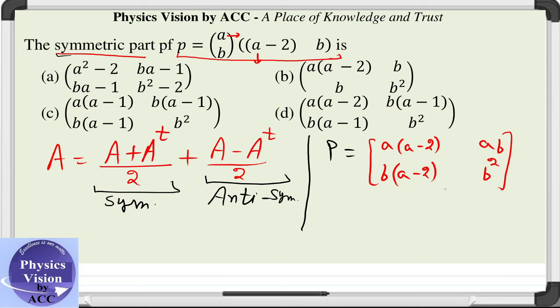On the other side, its transpose can be written as: A(a-2) will remain the same, this will become AB, this will become B(a-2) on this side, and this will be the same as the earlier thing, so B squared.